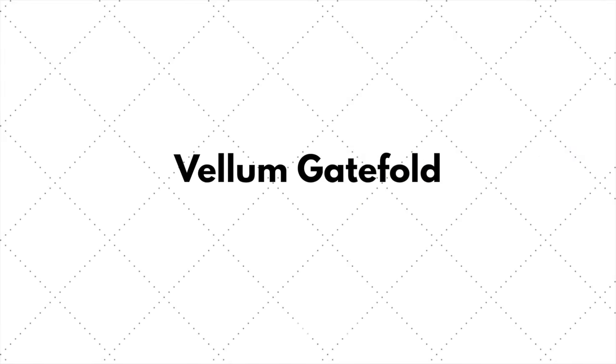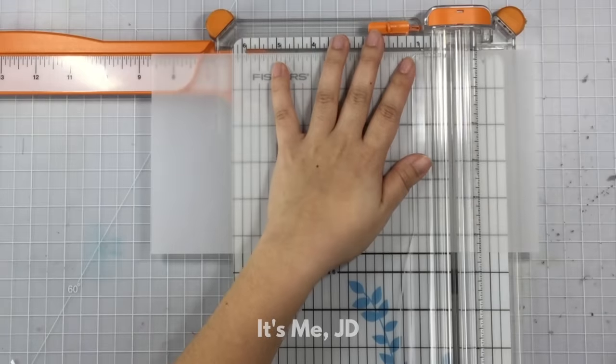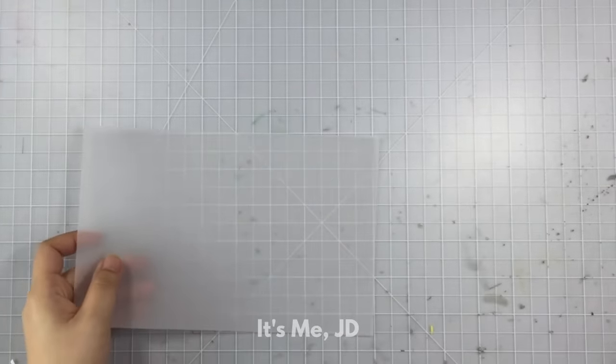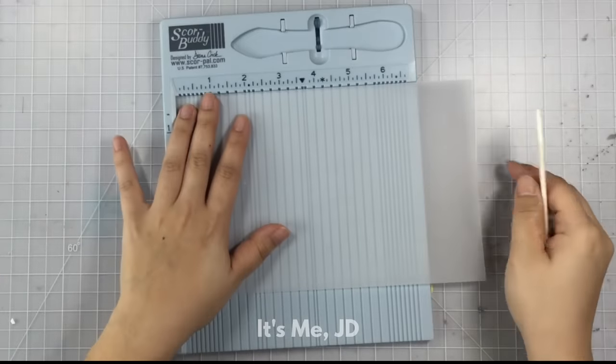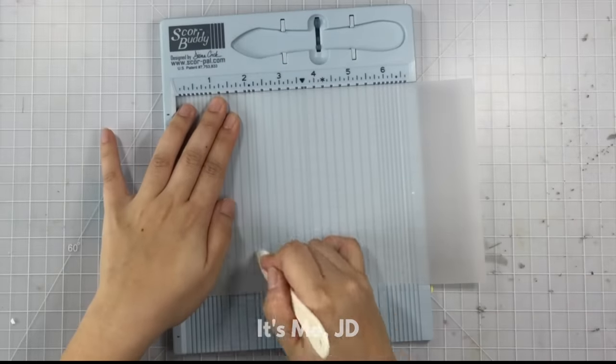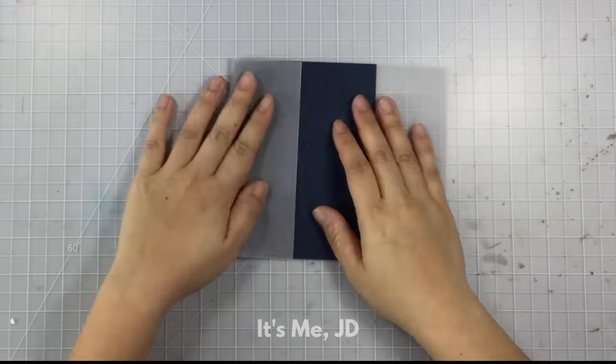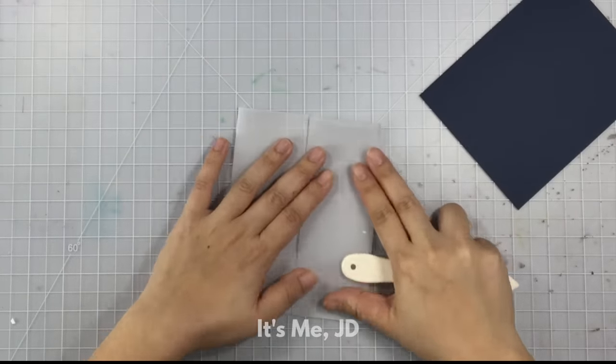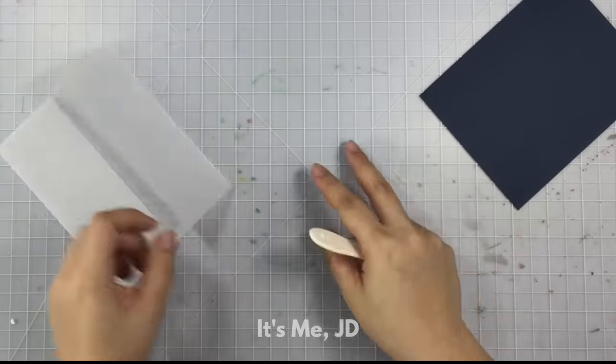The next way to create a gatefold card is to use vellum. Actually, you can do this with vellum or acetate. Acetate would be fun too. I'm cutting a piece of vellum down to size. I think it's five and a half inches by a smidgen over eight and a half inches. I'm going to score it just like at the two and one eighths mark again, but the reason why it's a smidgen over eight and a half inches is because this whole vellum panel is going to fold over my cardstock. So I wanted the cardstock panel to fit nicely in there, and even if it didn't fit, I could always trim the cardstock panel down to size.